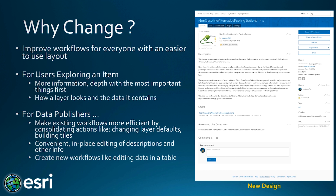So why are we changing the item page? It's about improving workflows — everyone's workflows, from people who are exploring items, searching and finding them, to users who are publishing items. It's also about providing some new functionality alongside everything you could do before. As you look at the new design, you'll see we've updated the visual look and feel of item details, changing the type, colors, and layout to make it easier and more efficient to get your work done.